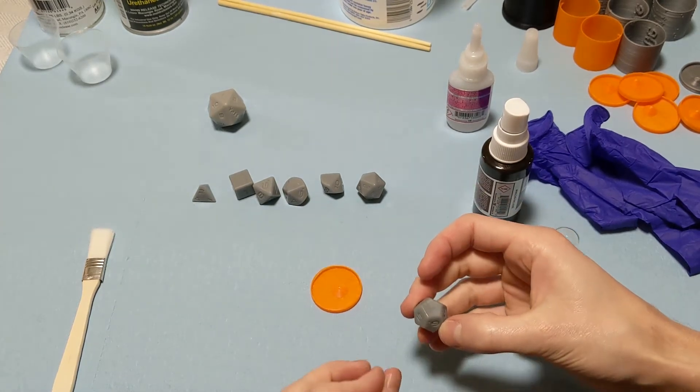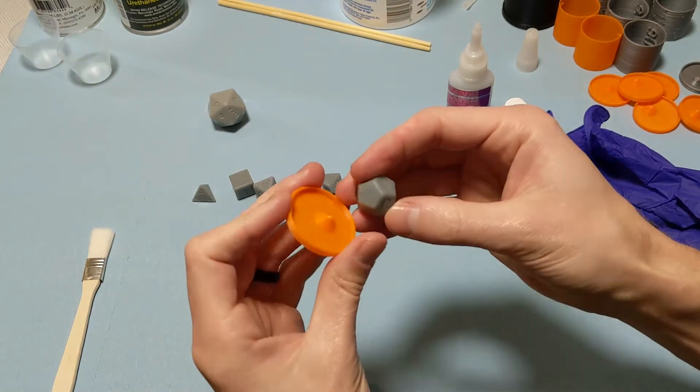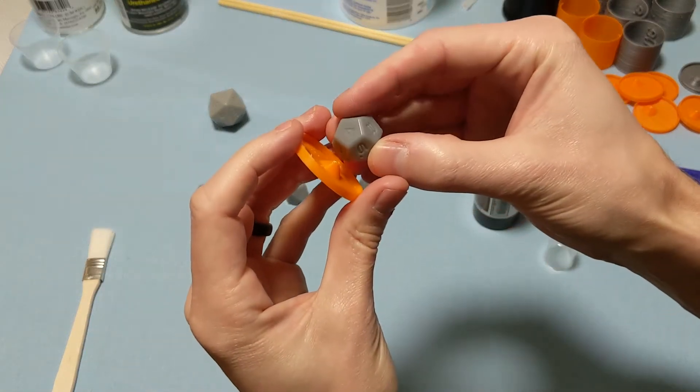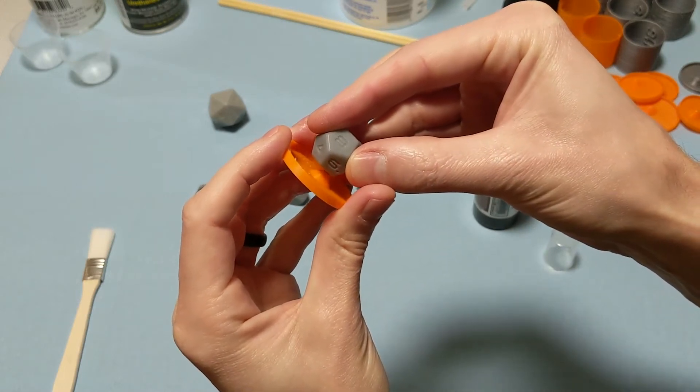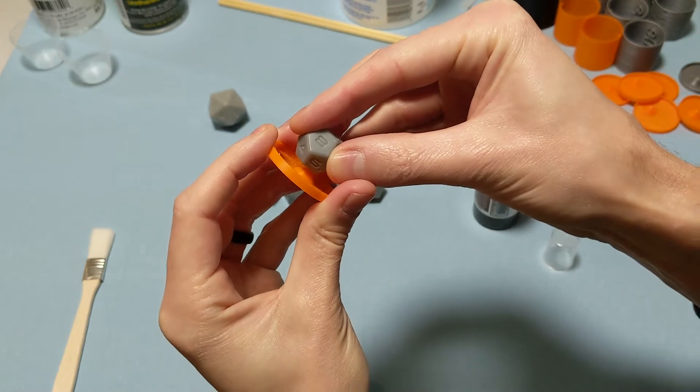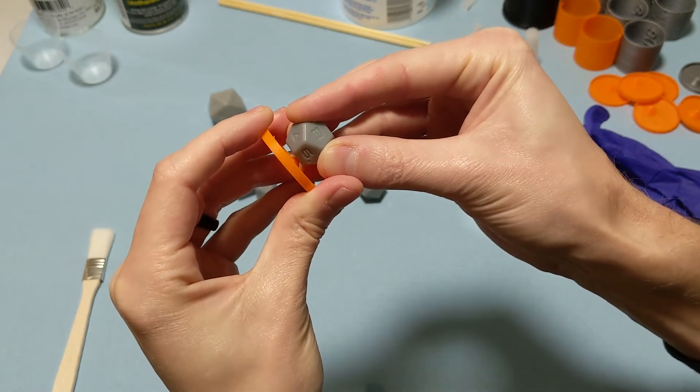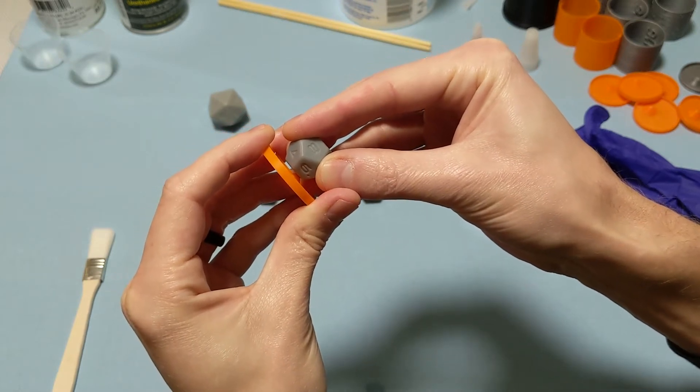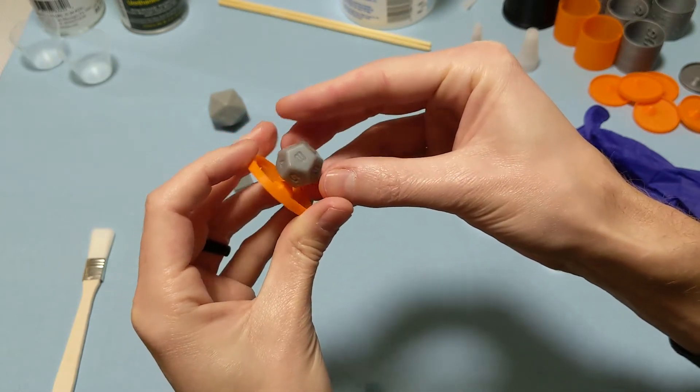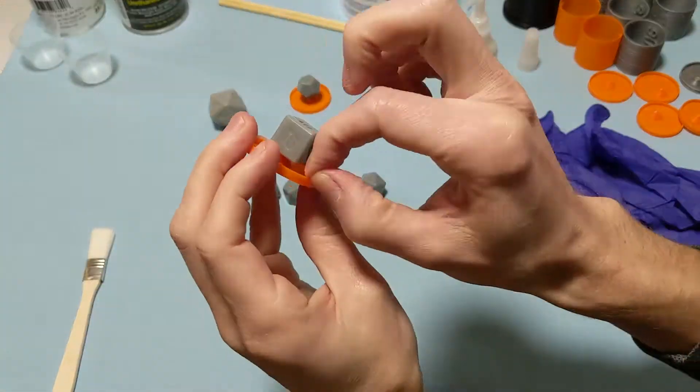I like the Smooth-On series. There's the Mold Star, Sorta Clear, and my favorite, the Dragon Skin. You can use whatever you have available or that you like the best. Also from Smooth-On is Inhibit X, which is what I will be trying to prevent cure inhibition, and then I will be using some Ease Release 200 mold release, which you're supposed to use one coat of after using two coats of the Inhibit X.